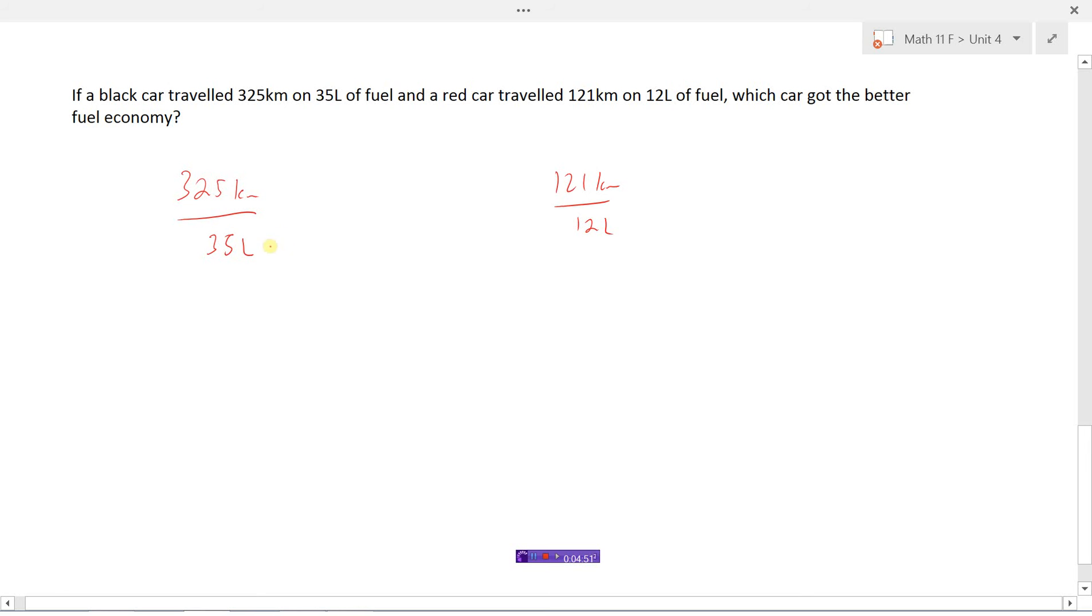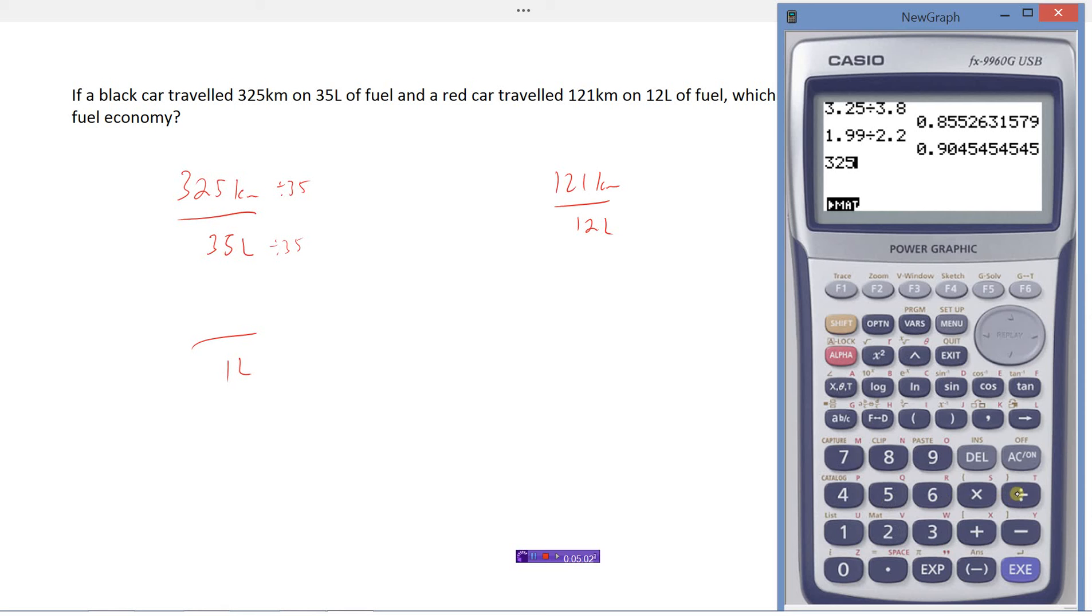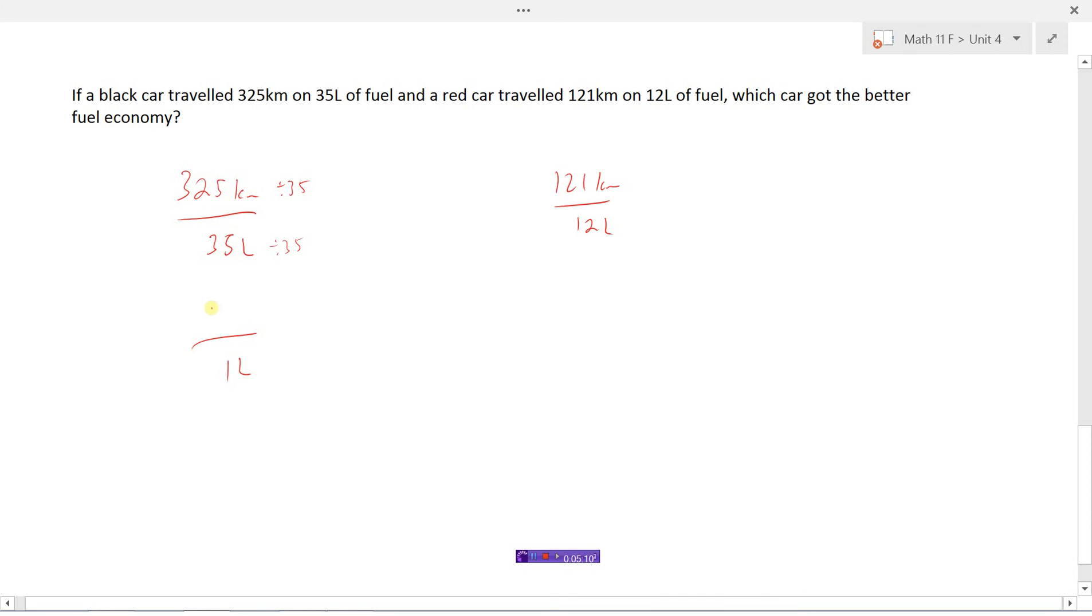And so same thing. If we divide this one by 35 to get how many kilometers for one liter. So 9 point, let's go to one decimal here, 9.3. So this particular car, this would be the black car. The black car was getting 9.3 kilometers for one liter of fuel.